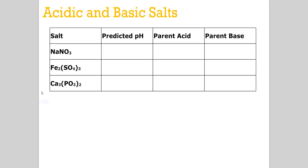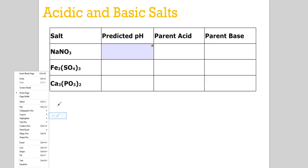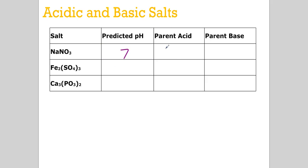So let's do some prediction here. Sodium nitrate. The parent acid would be hydrogen bound to nitrate. The parent base would be sodium bound to hydroxide. Our pH should be about seven. Iron two sulfate, iron three sulfate. Iron bound to hydroxide would be our base. Hydrogen bound to sulfate would be our acid. Strong acid, weak base. Five to seven pH. Strong acid.